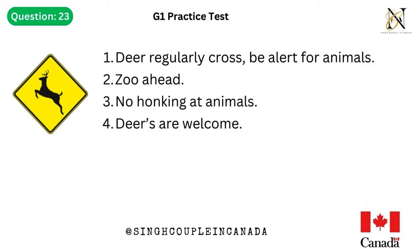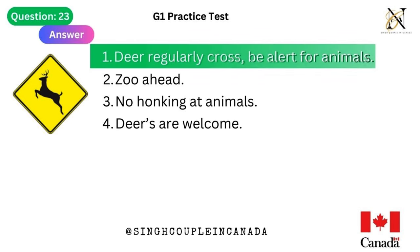Question 23. This traffic sign means: 1. Deer regularly cross, be alert for animals. 2. Zoo ahead. 3. No honking at animals. 4. Deer are welcome. Answer is 1. Deer regularly cross — be alert for animals.